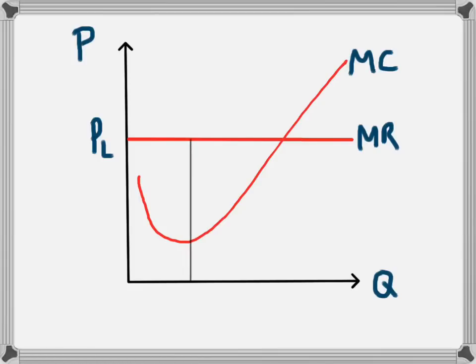If the business started to produce at this level of production, which is Q1, we can see that this Q1 product that they've produced has marginal revenue at that PL level. That's how much money the business receives from selling that product because that's the price level. The marginal cost of that particular product will only be down here at P1.